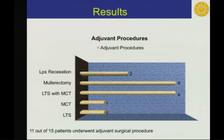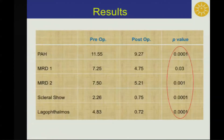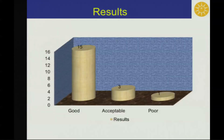Most common adjuvant procedures were lateral tarsal strip with medial canthal tightening and mullerectomy. Surgical outcomes were evaluated using final follow-up results. All parameters, such as palpebral aperture height, MRD1, MRD2, scleral show, and lagophthalmos, showed significant improvement according to the p-value. There were good results in 15 patients, acceptable results in 3 patients, and poor result in 1 patient.